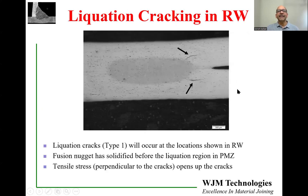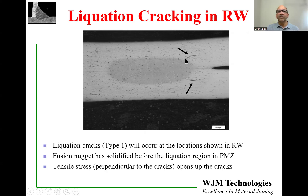Here is an example of liquation cracking in resistance welding. These are two sheets of Inconel 718 which have been welded with resistance welding. You can see a nugget — this was a fusion nugget, so this volume would have been in molten condition during the weld. You can see a faint outline of the heat affected zone, and you can see two cracks starting and extending into the heat affected zone. This location at the edge of the nugget is a common location to see liquation cracks. You are unlikely to see liquation cracks on the top surface of the nugget because of the compressive stress applied during the weld.